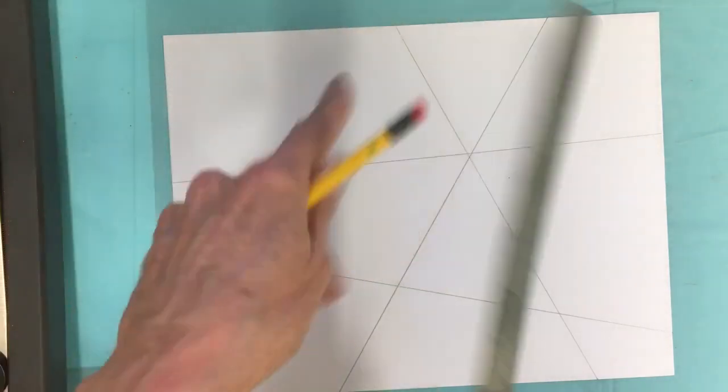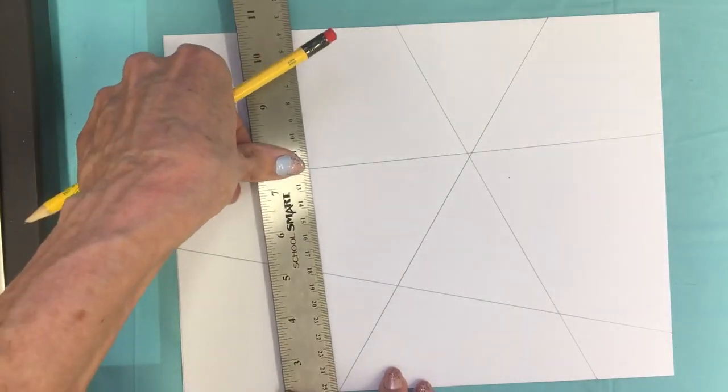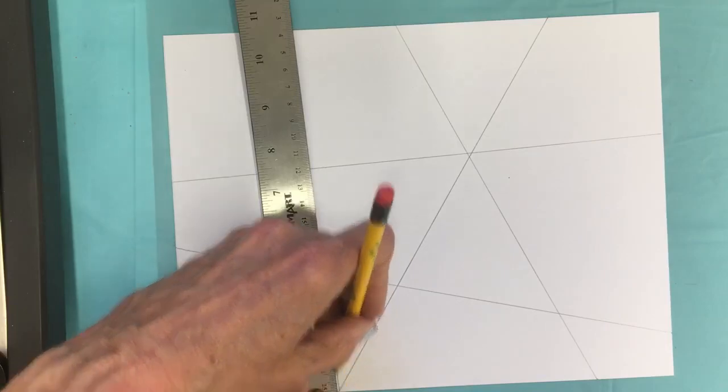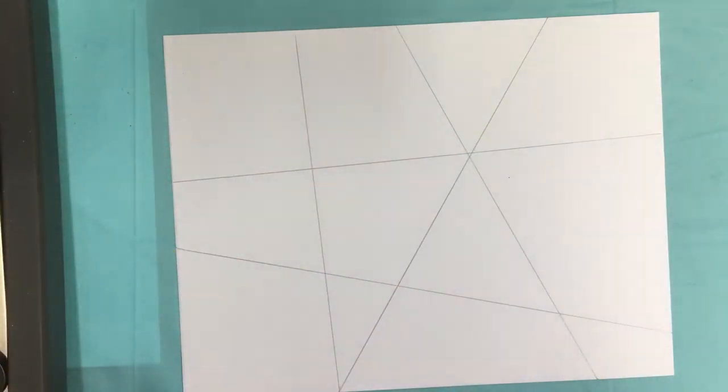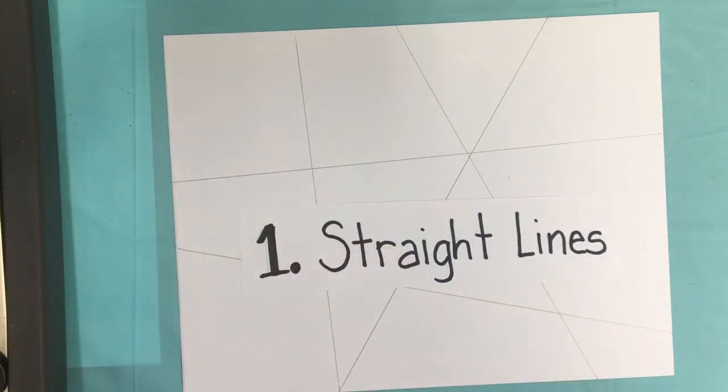So maybe I'm going to add one more line. These shapes look a little bit big to me so I'm going to add just one more line. So that is the first way that I can fragment my paper, just by using some straight lines.